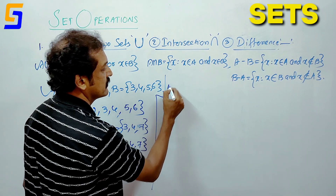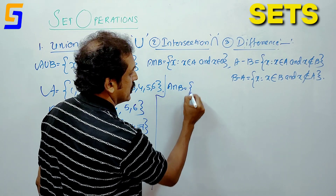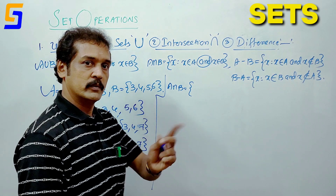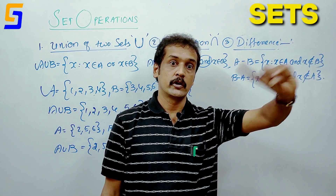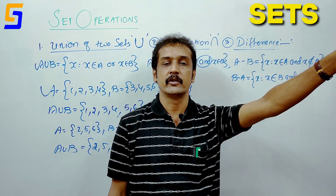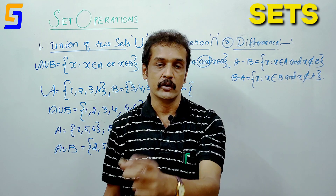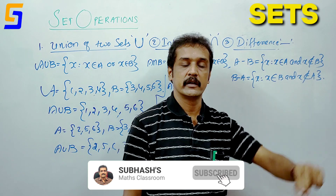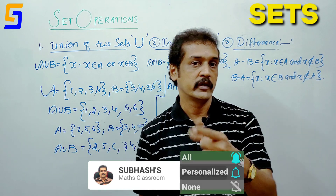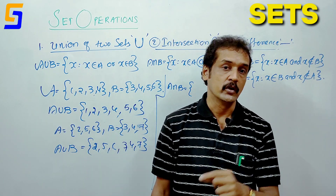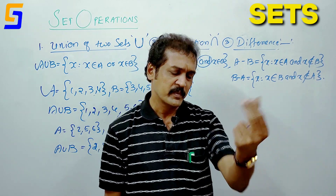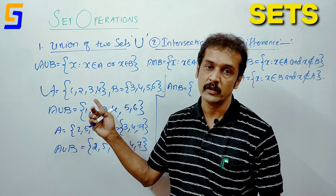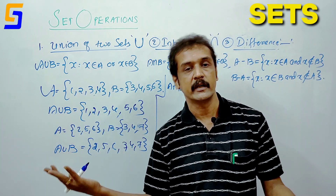Intersection. Intersection means the common elements between two sets. You take what is common — the elements that appear in both A and B. We have one last answer here.